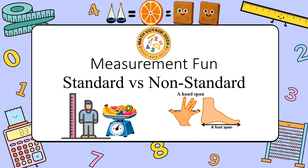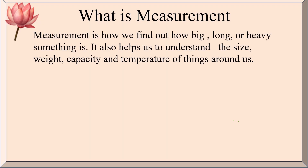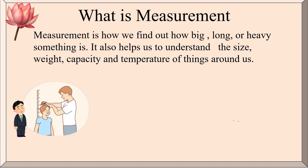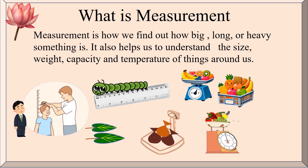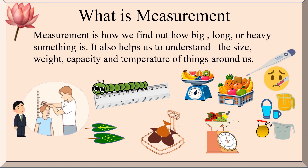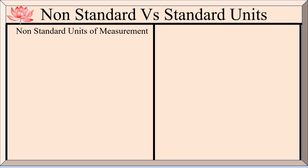What is measurement? Measurement is how we find out how big, long, or heavy something is. It also helps us understand the size, weight, capacity, and temperature of things around us. Measurement helps us understand height, which we measure using a height scale; length, which we measure using a ruler; weight, using different types of scales; capacity, using measuring cups; and temperature, using a thermometer. For body temperature, we use a clinical thermometer.